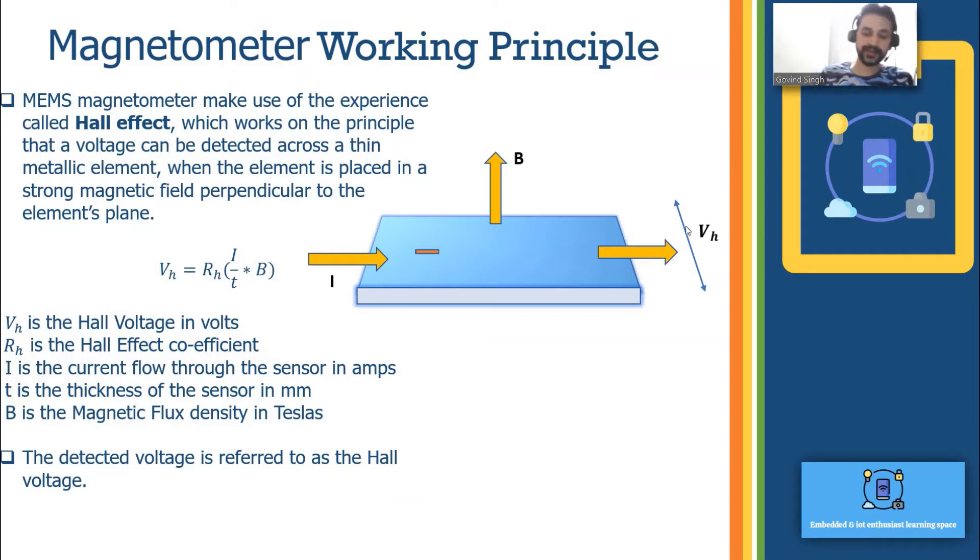Why this voltage is detected? The voltage is detected because of the magnetic field, the current flow gets unevenly distributed. That's the reason the voltage or the potential is generated across the electrode or across the plane of that surface.